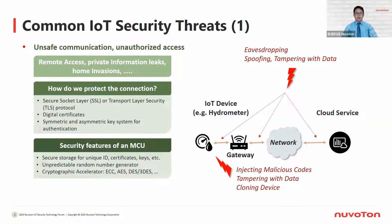In the beginning, let's address common IoT security threats. Firstly, it's unsafe communication, unauthorized access like remote access, private information leaks, and home invasions. How do we protect the connection? We can adopt Secure Socket Layer SSL, TLS protocols, digital certificates, and symmetric and asymmetric key systems for authentication.